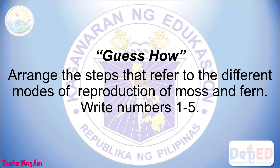Future scientists, get your pen and paper and let's try to do this guess-how. Arrange the steps that refer to the different modes of reproduction of moss and fern. Write numbers one to five.